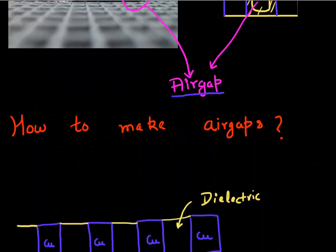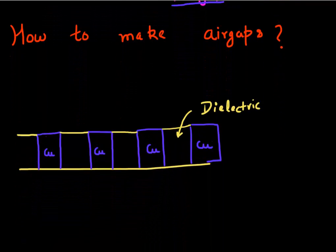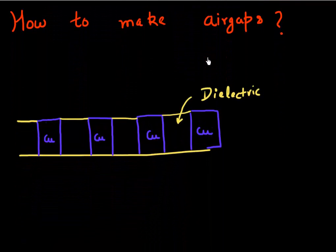How do I form these air gaps? This is my typical damascene process flow. The way it would work is I would have a dielectric, and I would create these molds, and then I would fill them or electroplate them with the copper.